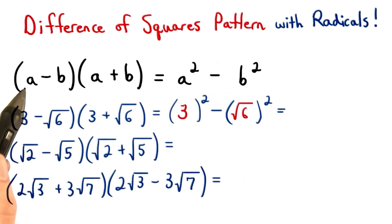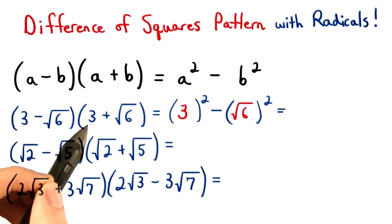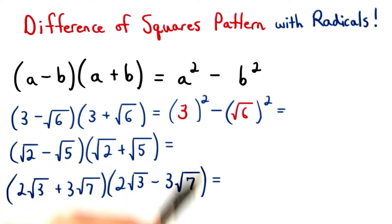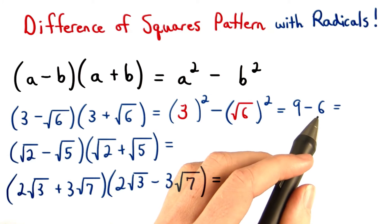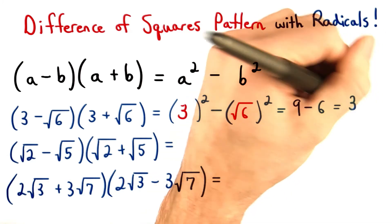For the first problem, we know that the a value equals 3, so we're going to square this 3. Our b value is square root of 6, so we'll square the square root of 6. 3 squared equals 9, and the square root of 6 squared equals 6. Then we subtract these two numbers to get positive 3.